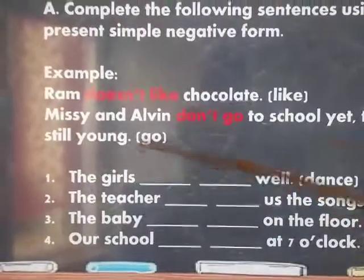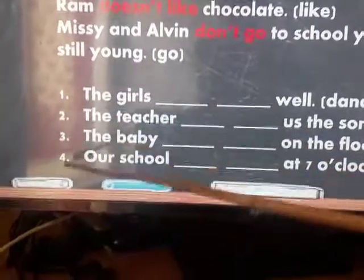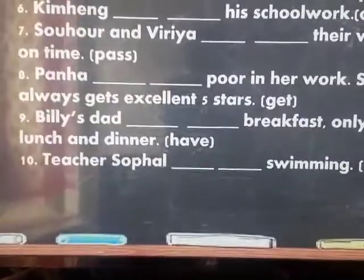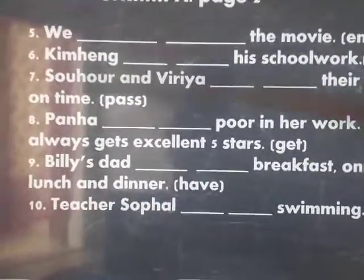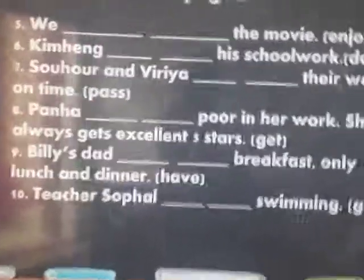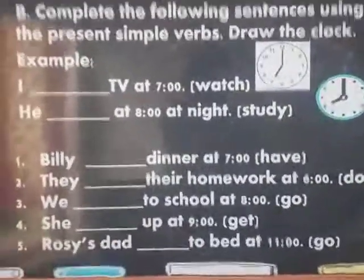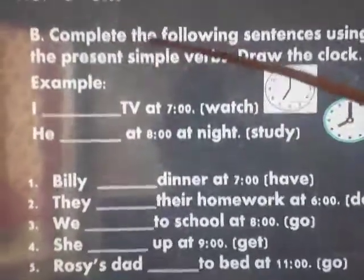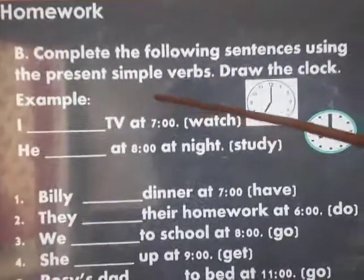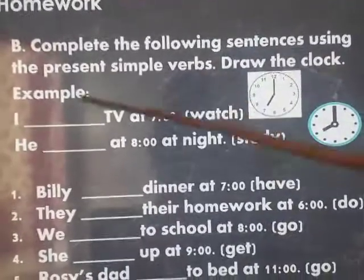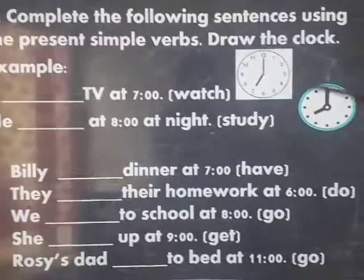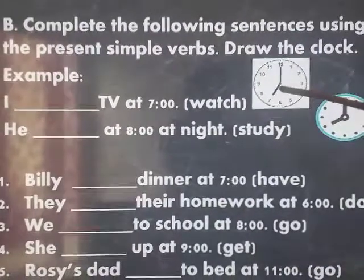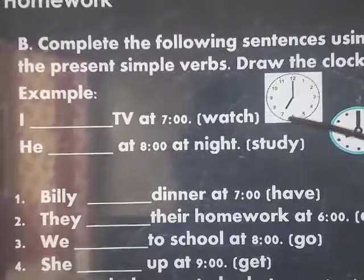The verb in that example is 'go.' Homework A has ten sentences total. Homework B is about the clock — complete the following sentences using the present simple verbs. For example: 'I watch TV at seven o'clock' — you draw a clock with the short hand pointing to seven and the long hand pointing to twelve.